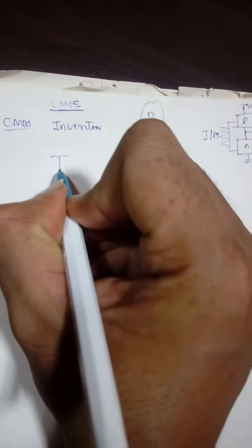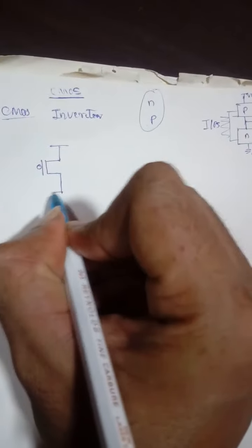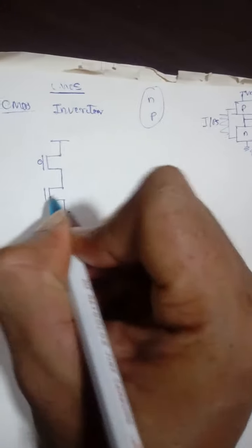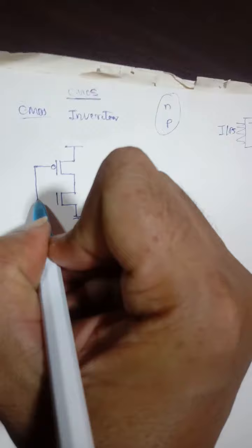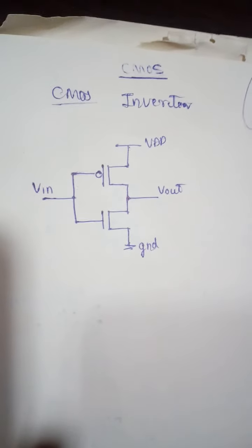The pull-up logic should have a P transistor and the pull-down logic should have an N transistor. You give the input to the gate terminals shorted together — this is called VIN. The output is taken between the drain terminals, which we call VOUT. VDD is at the top and ground is at the bottom.